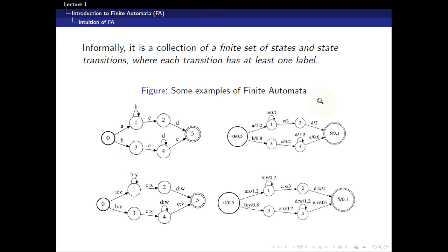Informally, a finite automaton is a collection of finite states and state transitions. We can think of the finite states as the circles you see here and the state transitions as the arrows. For the time being we ignore the labels, which are the stuff you see on top of the arrows. Here are four different types of finite automaton and hopefully we'll get to discuss them as these lectures progress.